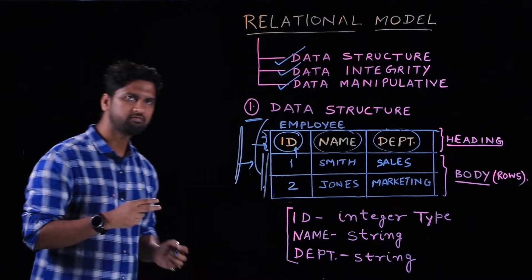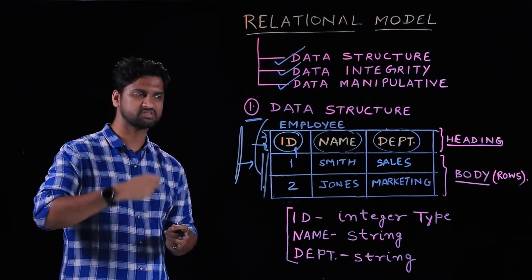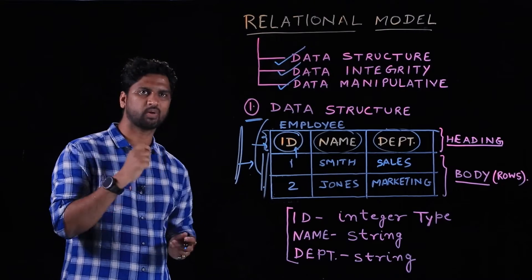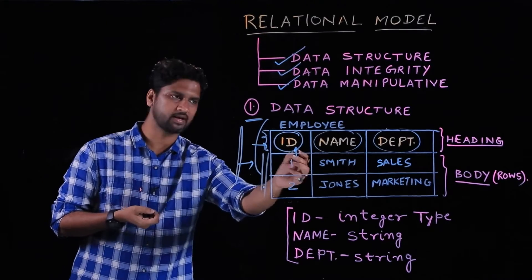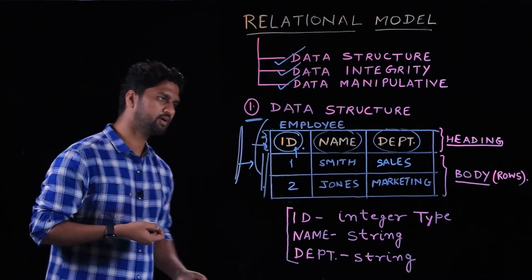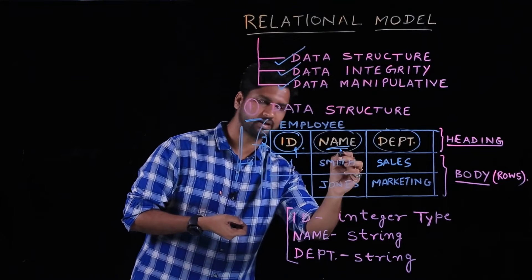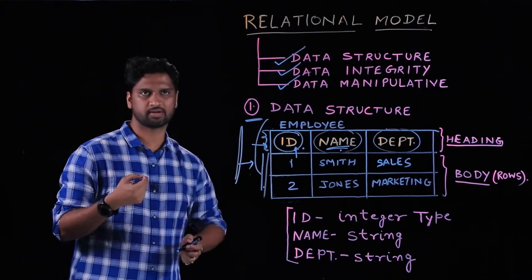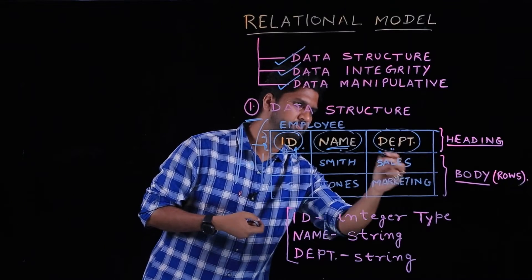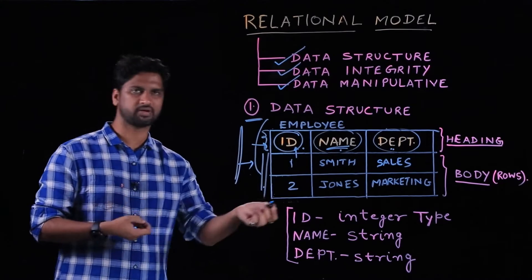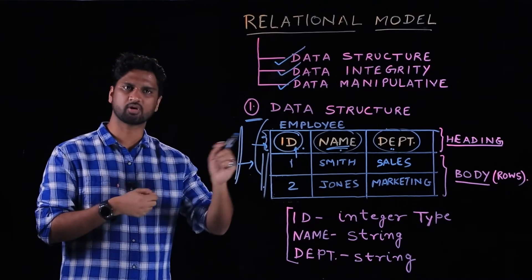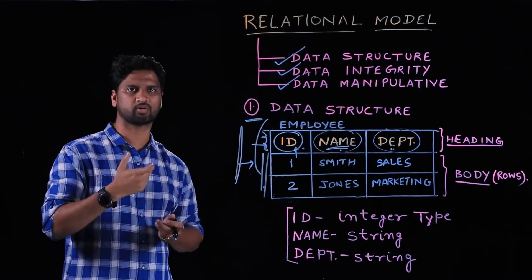A heading is composed of different columns, and each heading entry consists of two things: a name, which is an identifier, and its type — what kind of data it is. For example, ID is the name and its data type is int. Similarly, the name column has the value 'name' and its type is string or varchar. Likewise, department is a heading whose type can also be string or varchar.